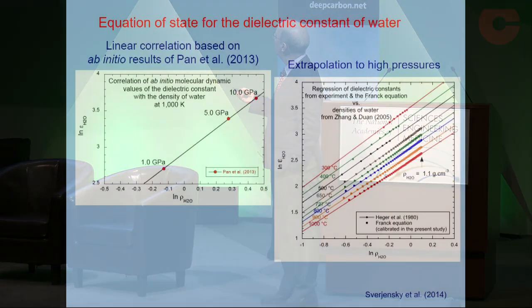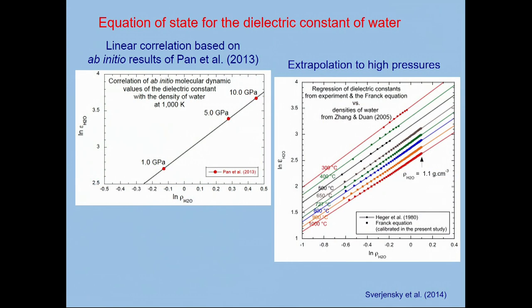Shown here are results from a very important study by Dean Pan et al., published in 2013, where the dielectric constant of water was predicted from ab initio molecular dynamics at several different conditions, and we can see that it correlates empirically with the logarithm of the density of water. Building on that correlation, we made predictions of the dielectric constant of water over a very wide range of pressures and temperatures, so that we could then analyze experimental data.